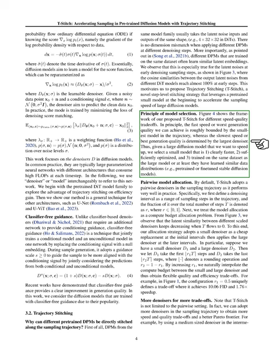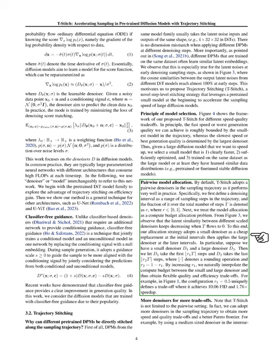Our default approach with T-Stitch involves pairing models together along the sampling trajectory. We define a denoising interval as a portion of the total number of steps, denoted as T, and this fraction is represented by R, which can range from 0 to 1. We allocate a smaller model to the initial intervals and switch to a larger model for the later intervals. For example, if we have a small denoiser D1 and a large denoiser D2, we might let D1 handle the first portion of steps and D2 the remaining, adjusting the split to balance between quality and efficiency.